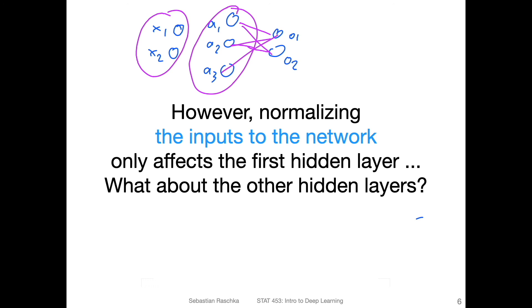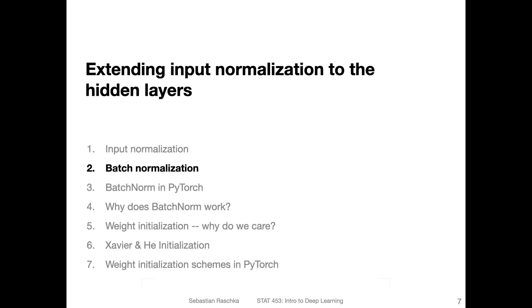So that might also be helpful to standardize the activations, the hidden layer activations, because you can really think of these activations as the inputs to the next layer. They're essentially just like x, except that these are the inputs to the next layer. So in the next video, I want to talk about one technique called batch norm, which is essentially a variant of standardization for standardizing hidden activations. It's coming with a twist, there will be two learnable parameters for that. But essentially, you can think of it as standardization of the hidden layer activations. So that will be the topic of the next video.